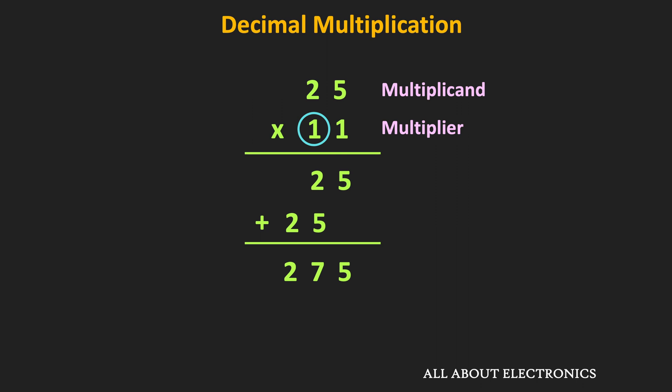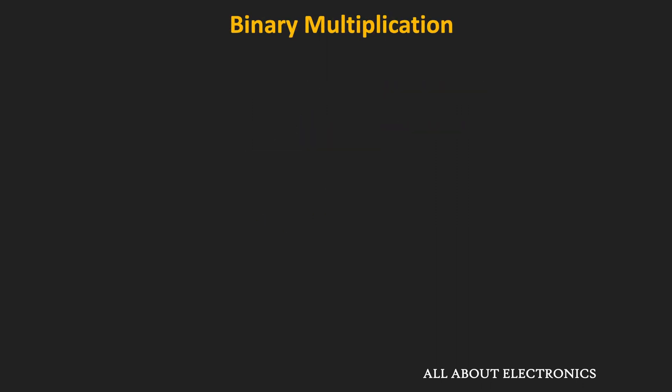The multiplication of binary numbers is also very similar. In fact, in the binary number system, since we have only two digits, the multiplication process is even simpler. In the binary number system, for the two digits, we have only four different possibilities.